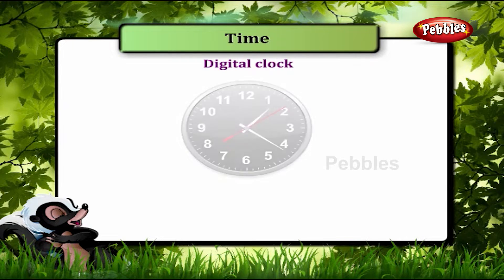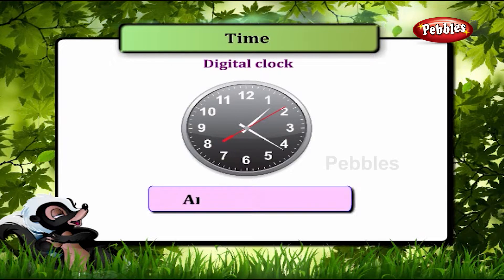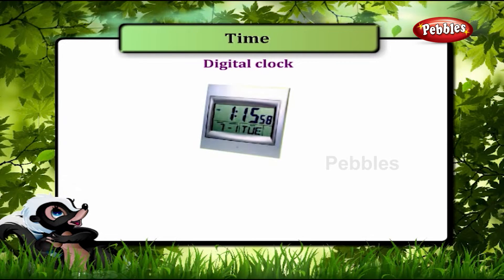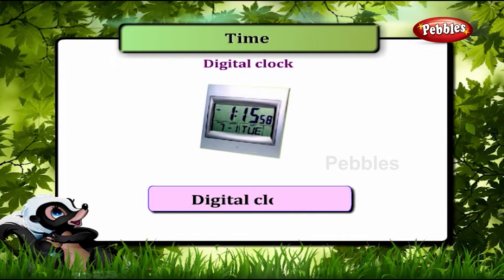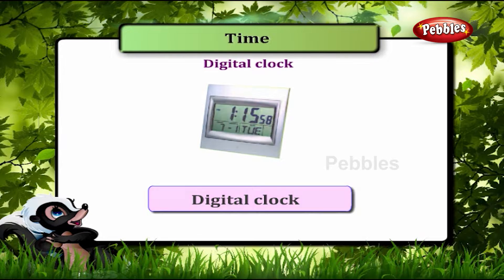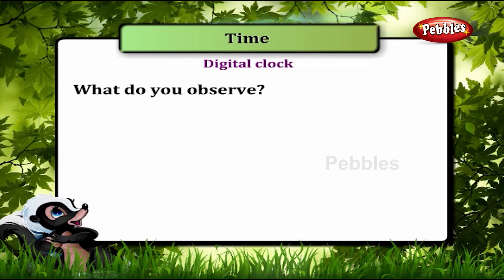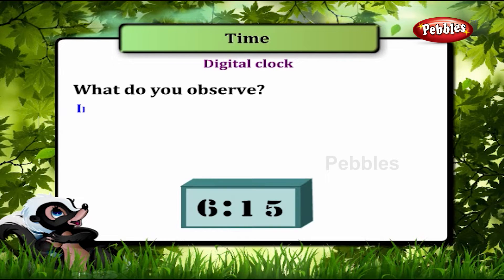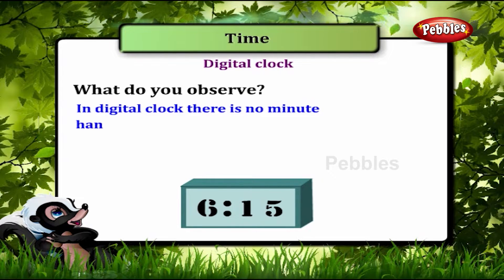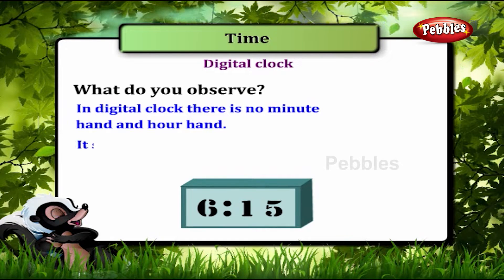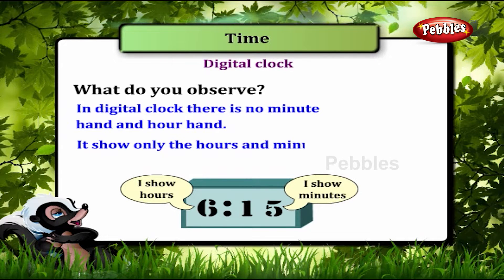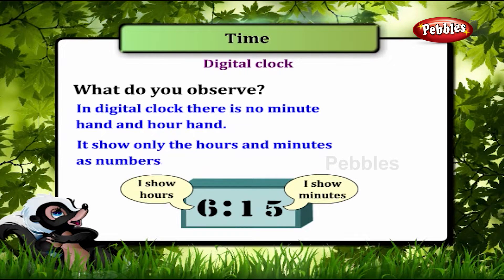Digital clock. This is an analog clock and this is a digital clock. What do you observe? In a digital clock, there is no minute hand and hour hand. It shows only the hours and minutes as numbers.